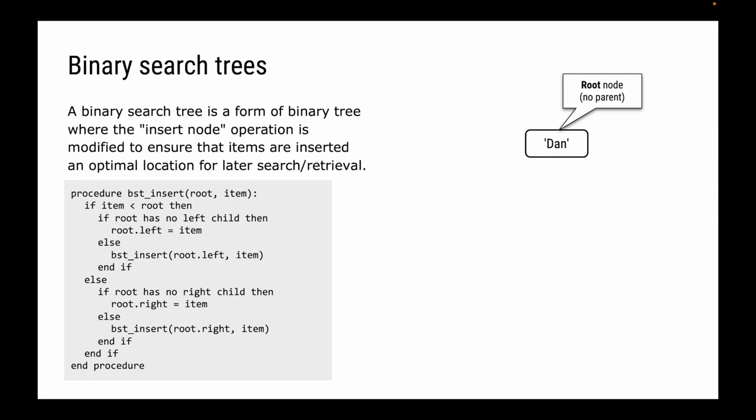Let's talk about binary search trees. This is a particular type of binary tree — you can have a binary tree that isn't a binary search tree. It's a particular type where the insert node operation is modified in order to ensure that items are placed at an optimal location for later search and retrieval.